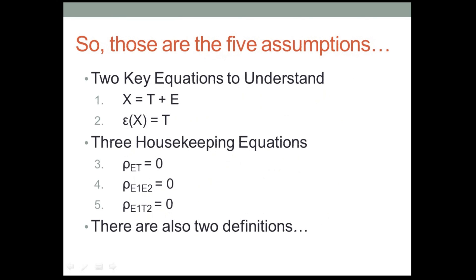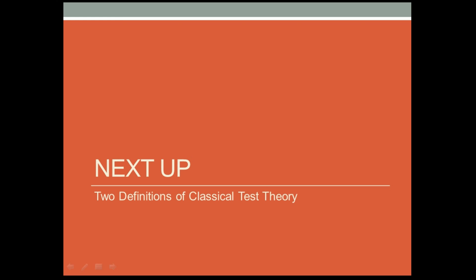So to wrap up this video, those are the five assumptions of classical test theory. There are two key equations to understand, X equals T plus E, and the expected value of X equals T. There are three housekeeping equations: that the population correlations between error scores and true scores is zero, between error scores on two different tests is zero, and between error scores on one test and true scores on another is zero. And there are also two definitions that get classical test theory off the ground, get it started. And that's going to be next up.